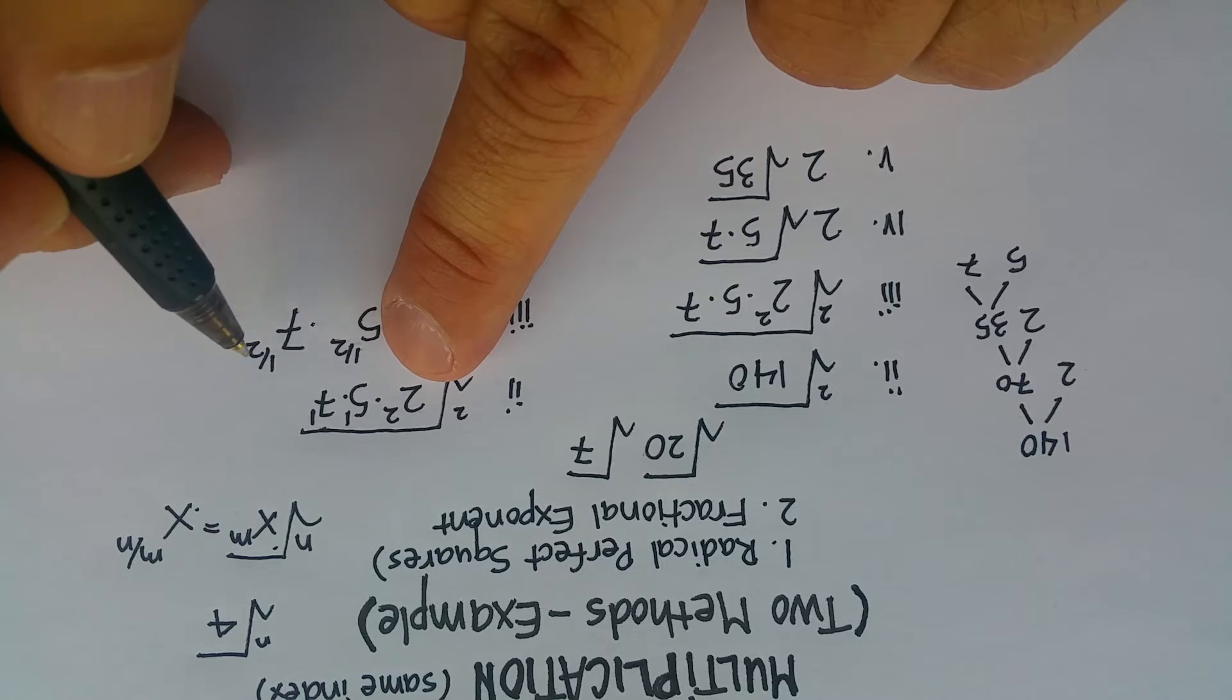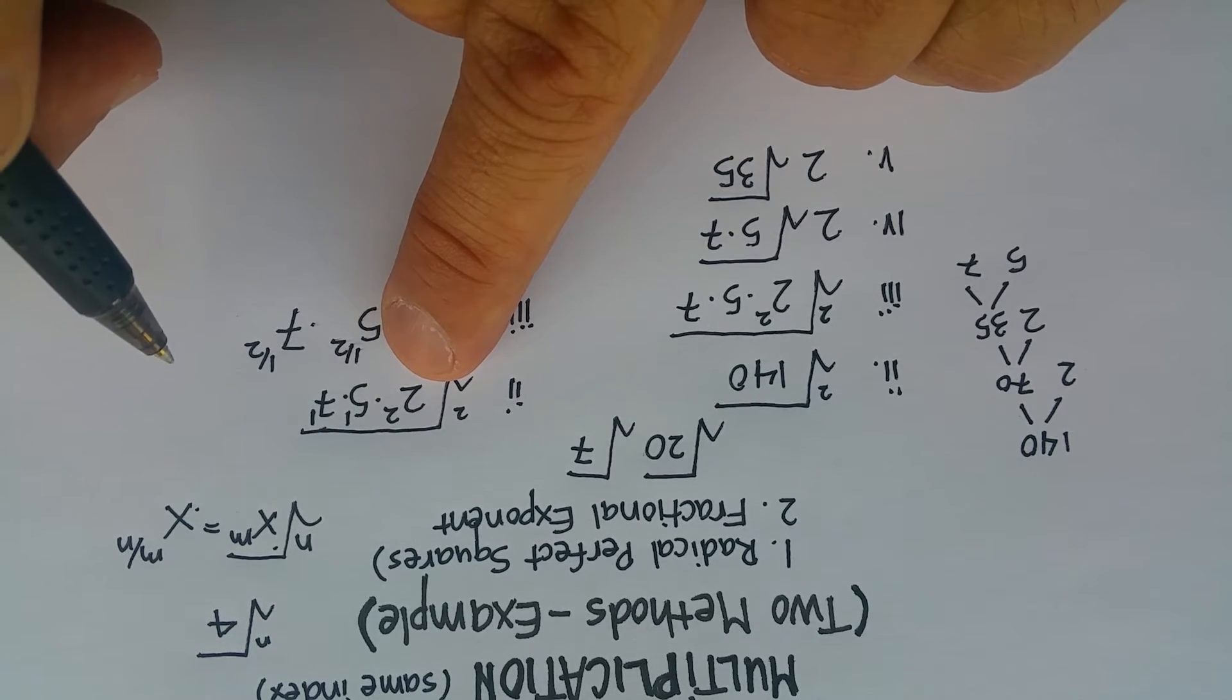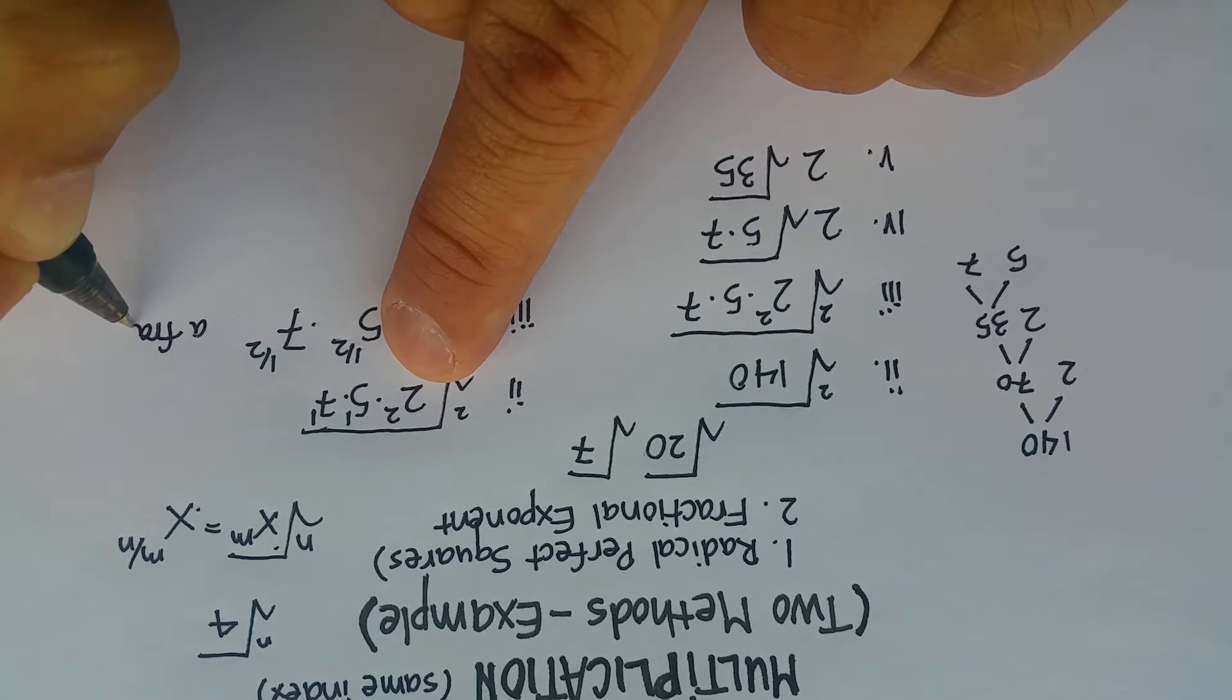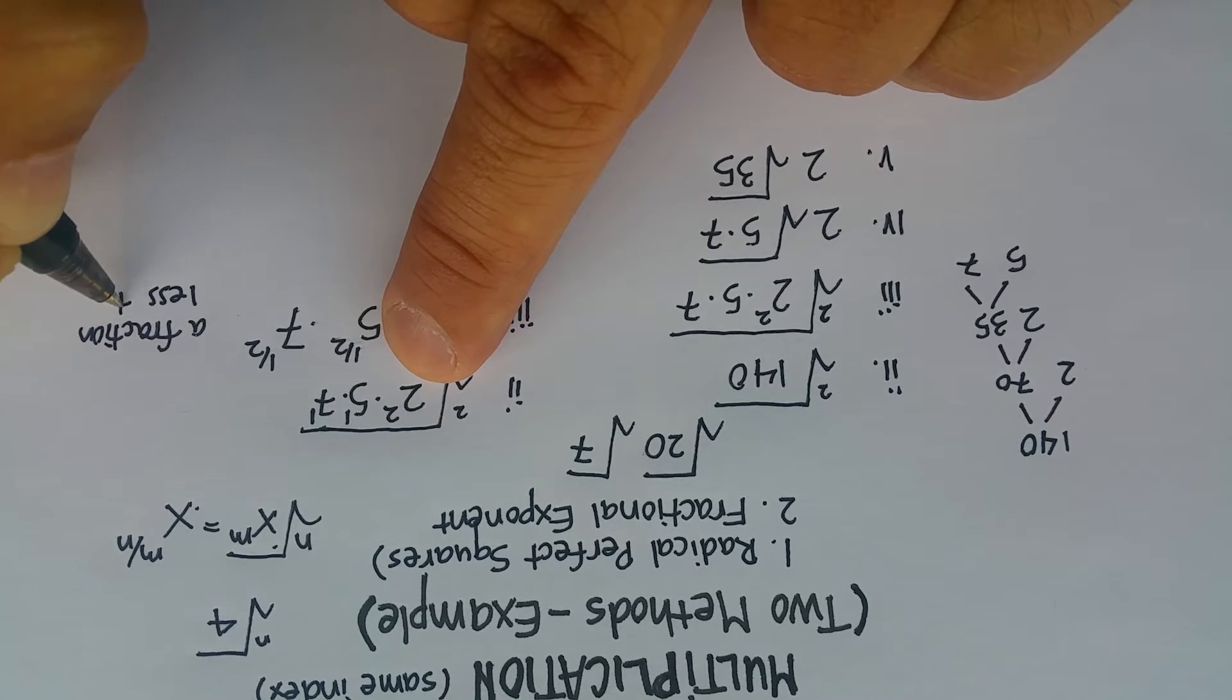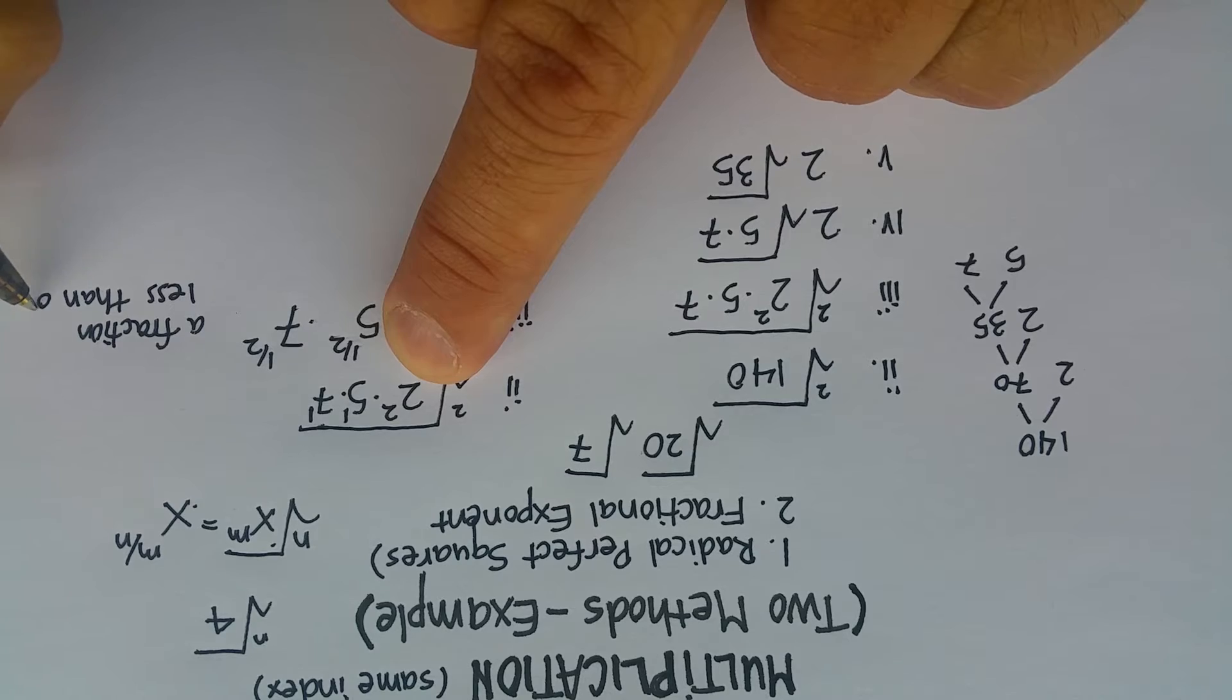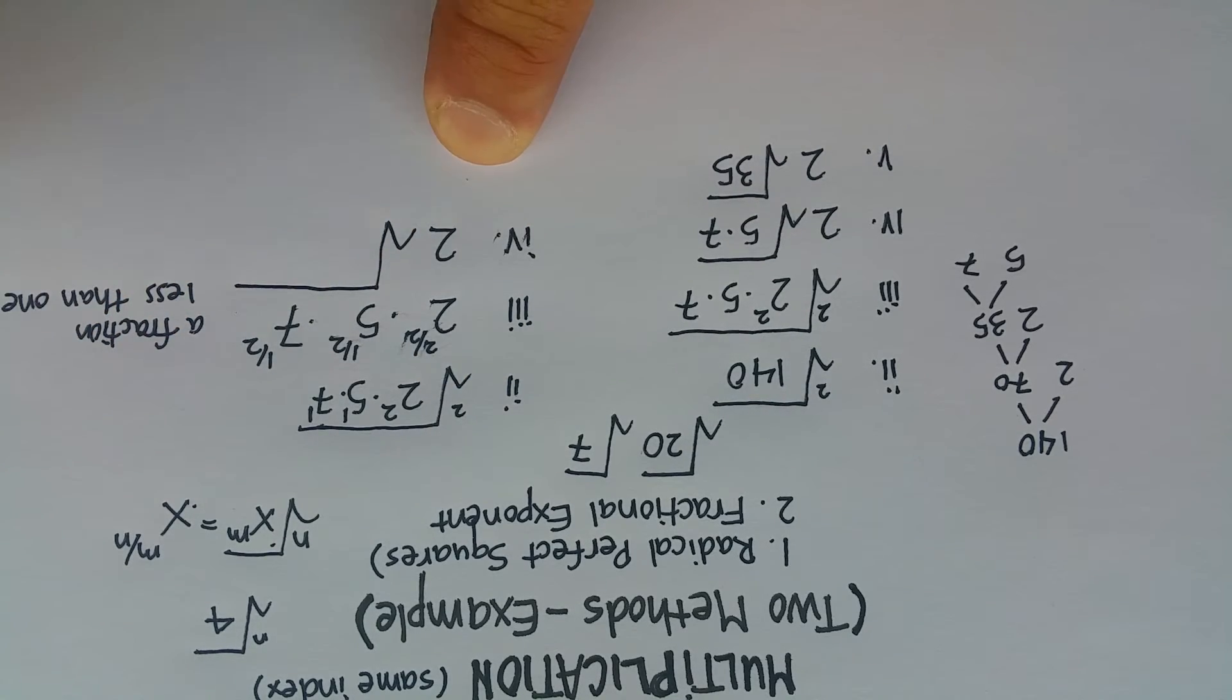If it stays as a fraction, you can't reduce it any further, and it stays as a fraction less than 1. Let me write that down. A fraction less than 1. You put it back under the radical, and you just reverse the method.